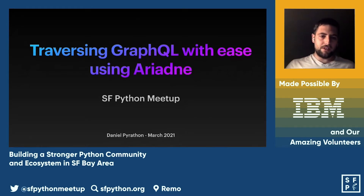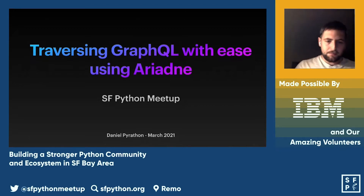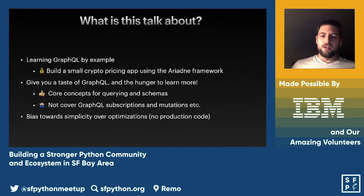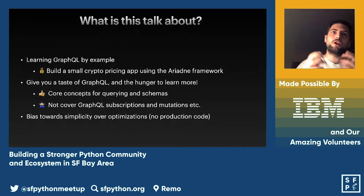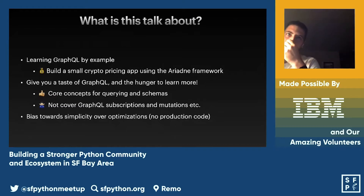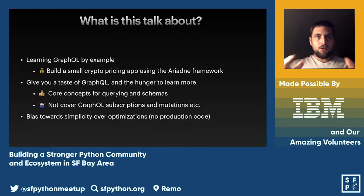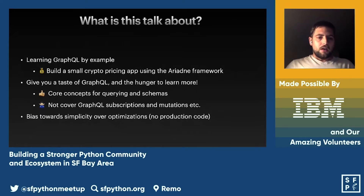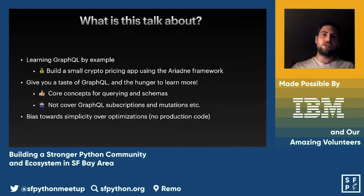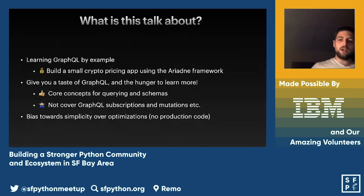Today we're going to learn what GraphQL is by example. My goal is not to dive deep, but to use the magic of Python to quickly cover some of the most core concepts of GraphQL. We're going to be building a small crypto pricing app. The goal is to give you a taste of GraphQL, covering querying and schemas, keeping things simple and understandable — not optimizing for scale.